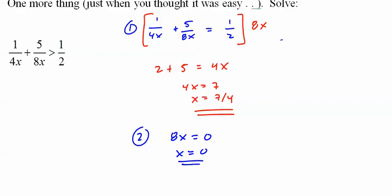Step 3: put them on a number line. 0 and 7 fourths.